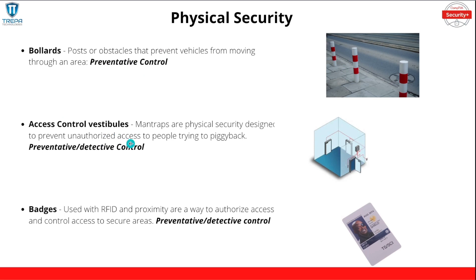Then we have access control vestibules, otherwise known as man traps. Man traps are physical security designs to prevent unauthorized access to people trying to piggyback. Someone wants to get access to a secure area — they scan their badge, and then someone comes up behind them and gets access to that secure area. A good way to prevent that is with this man trap or access control vestibule, which has two doors. One to get in, and then another door they have to scan in, so you can see if someone piggybacked off you. You'll probably have cameras in there, or even a reception desk in that man trap to see who is trying to piggyback.